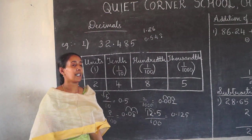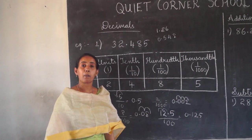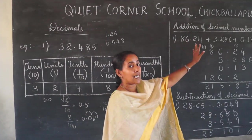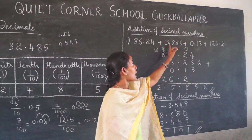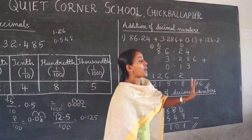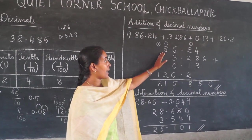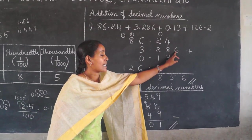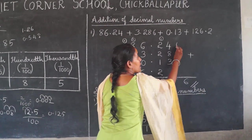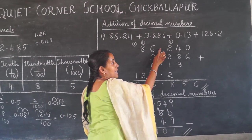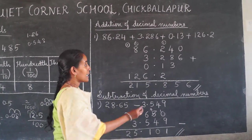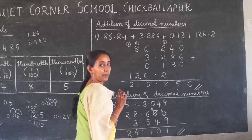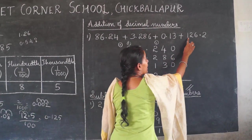Many of you find difficulty in adding and subtracting decimal numbers. The decimal point is very important while adding and subtracting. Here is one example: how to add 86.24 plus 3.286 plus 0.13 plus 126.2. See the first number: 86.24. The second number is 3.286 — here there is no digit above 6, so you can put 0 there. The point will come just below the first decimal point. The third number is 0.13, and you can put 0 where there is no digit.